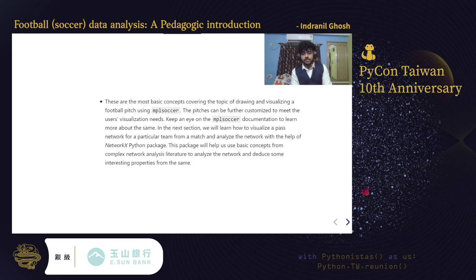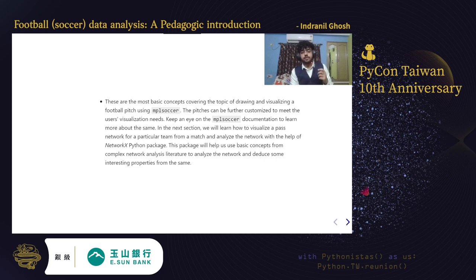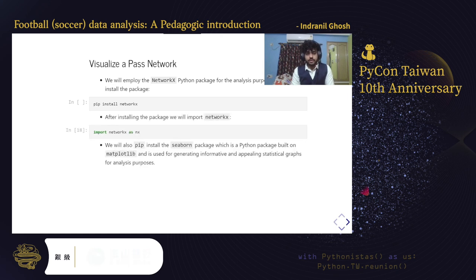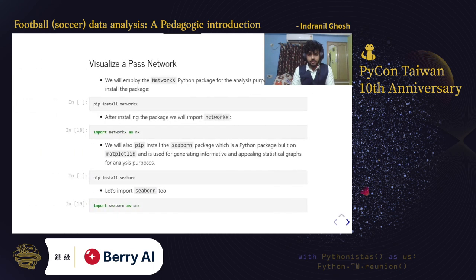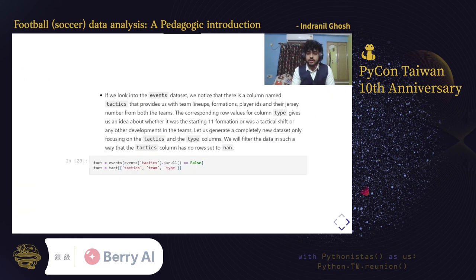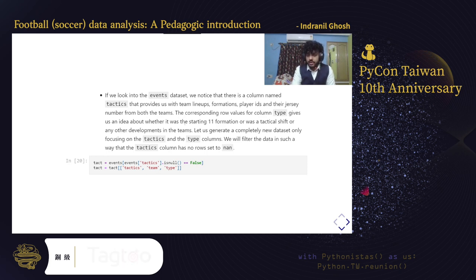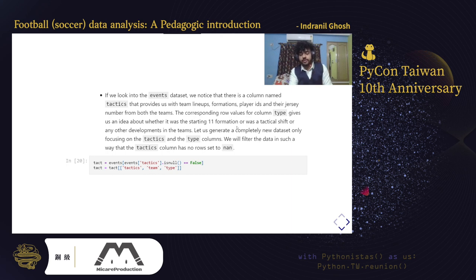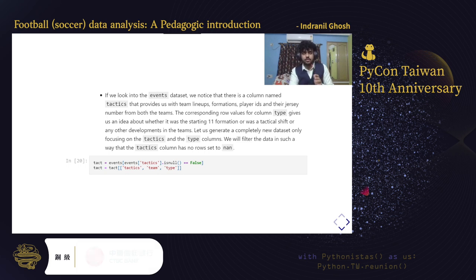Now we'll visualize and analyze a pass network for a particular team and match, then analyze it using complex network concepts. We pip install networkx and import it as nx, and pip install seaborn and import it as sns. Looking into the events dataset, we notice a column named 'tactics' that provides team lineups, formations, player IDs, and jersey numbers. The type column tells us whether it was a starting 11 formation or a tactical shift. We'll focus on the starting 11 players when building the pass network, since after substitutions the pass count drops and the analysis weakens.